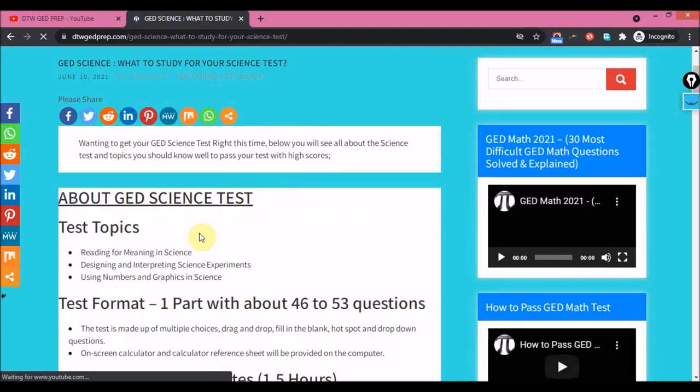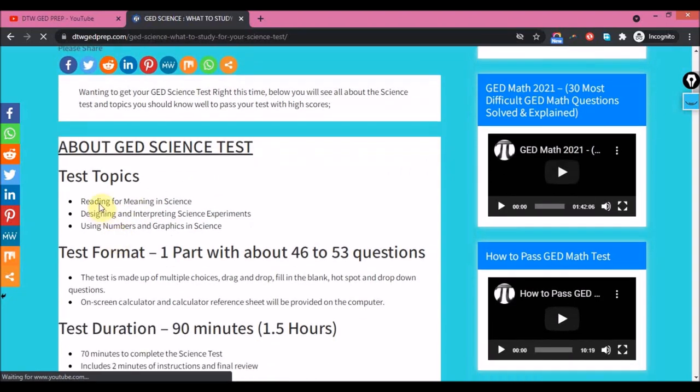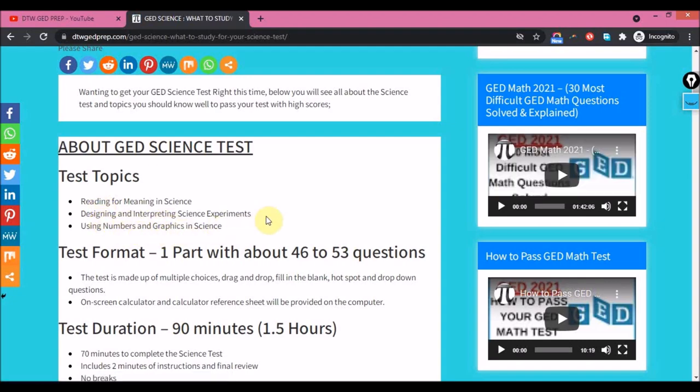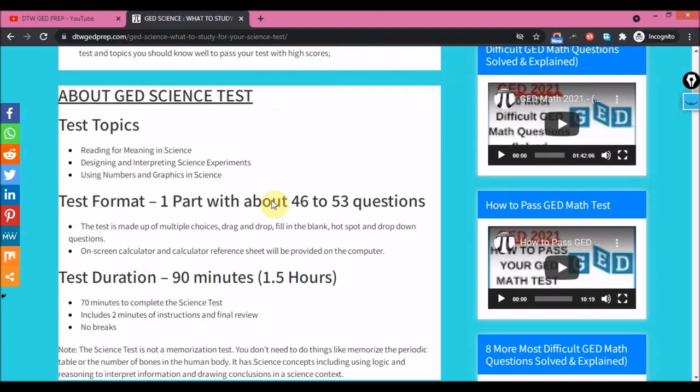So about the GED Science test - the test topics are: you get a lot of reading for meaning in science, designing and interpreting science experiments, and using numbers and graphics in science.